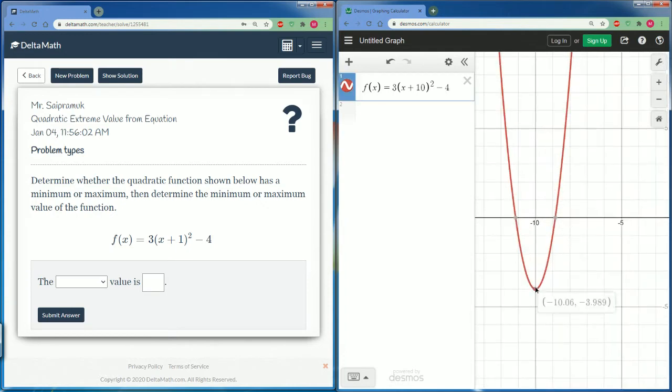So it looks like it has a minimum. So we would say it has a minimum and now it tries to look for a value. So notice that here it is a point, negative 1 comma negative 4. When it looks for the value, it's actually looking for the y value, the range. So the range here would be negative 4.